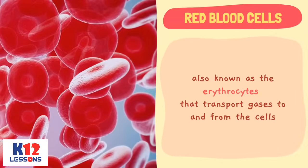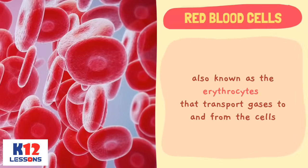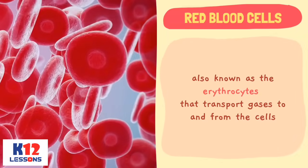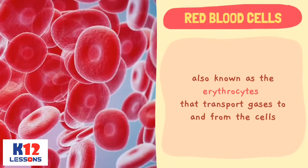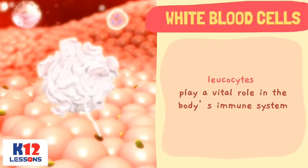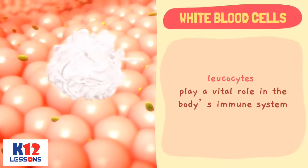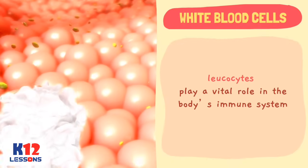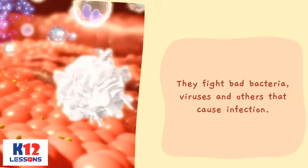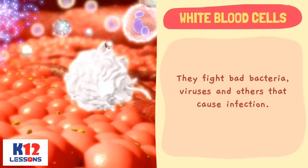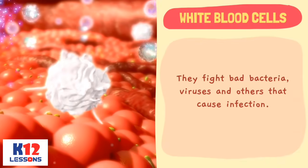The red blood cells, also known as erythrocytes, transport gases to and from the cells. The white blood cells, or leukocytes, play a vital role in the body's immune system. They fight bad bacteria, viruses, and others that cause infection.